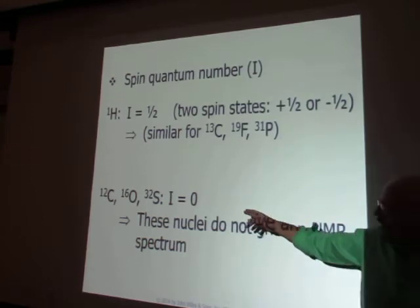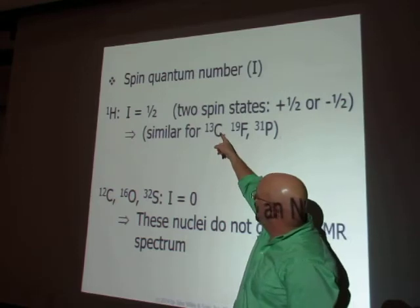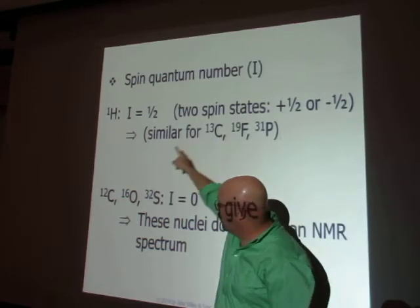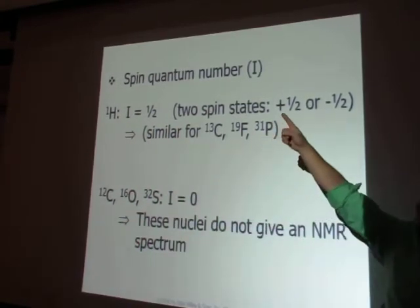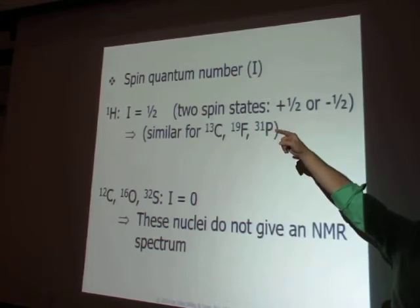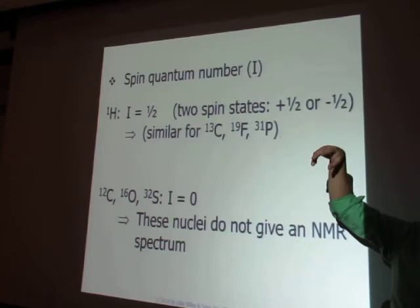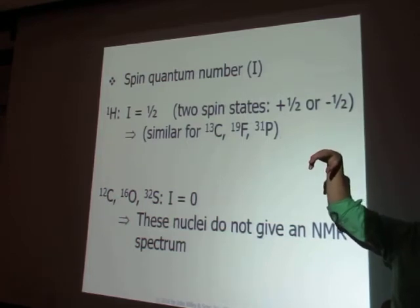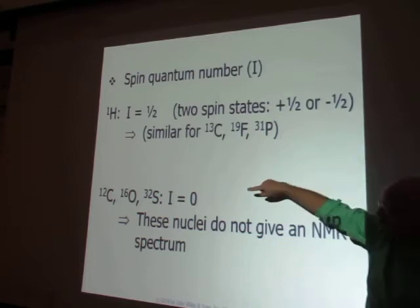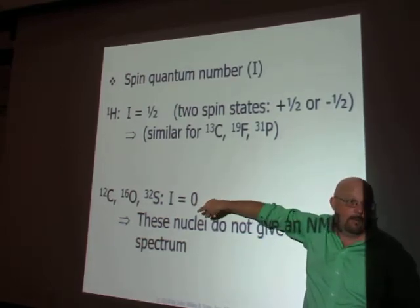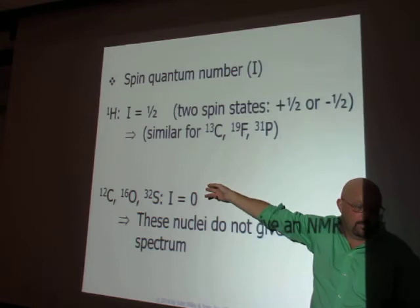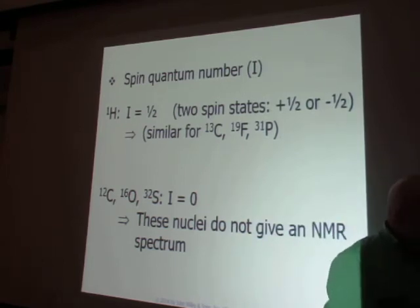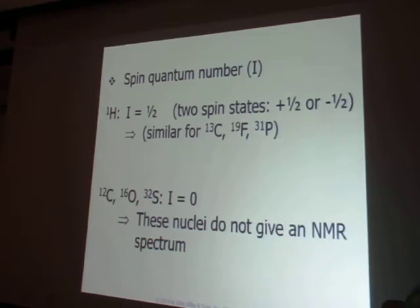Add one more to the list: we're going to be looking at carbon — carbon-13 shows up, carbon-12 does not. Protons show up, but the isotope of hydrogen does not. What's the isotope of a proton? Deuterium. Deuterium will not show up — add it to the list. Deuterium has a mass of two, which is an even number, so it will not show up in the NMR. Remember that — deuterium does not show up, and that's going to be important.